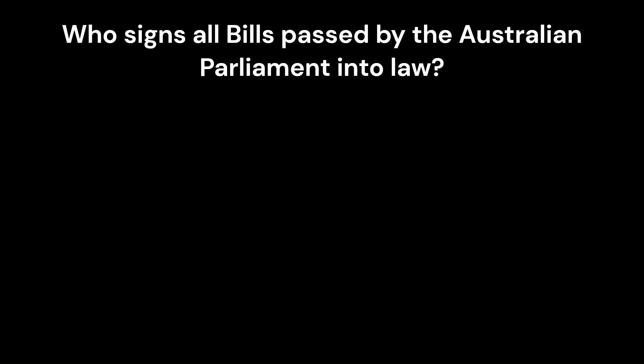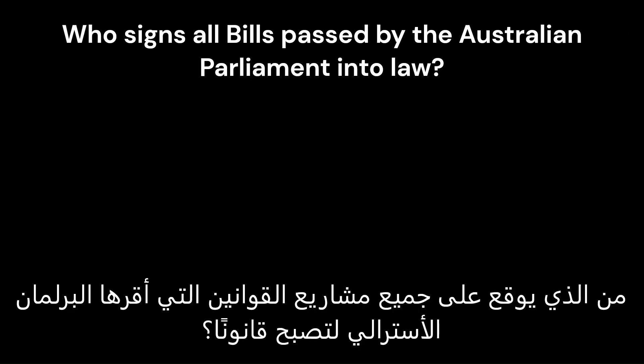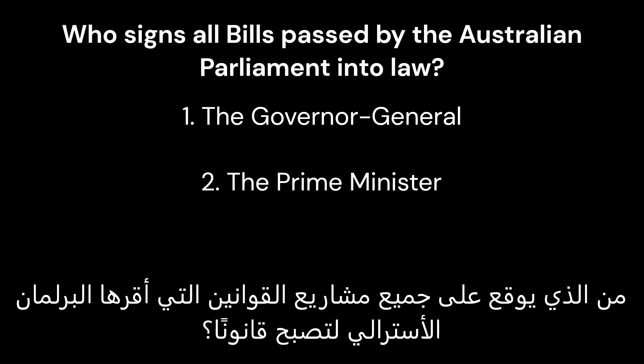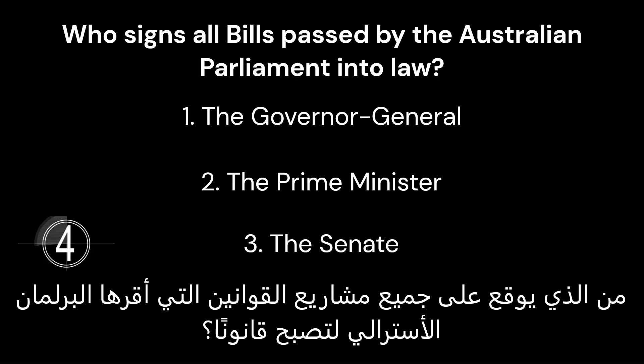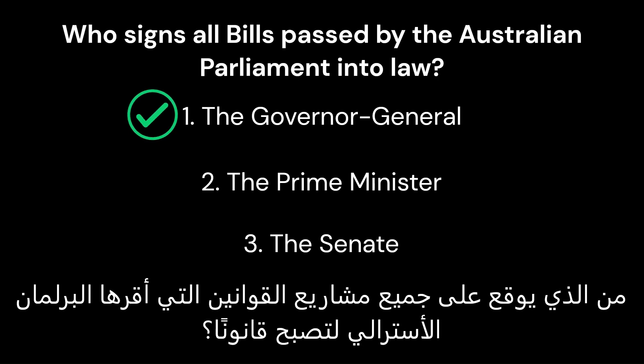Who signs all bills passed by the Australian Parliament into law? 1. The Governor General. 2. The Prime Minister. 3. The Senate. The correct answer is 1. The Governor General.